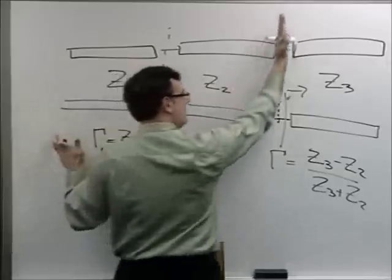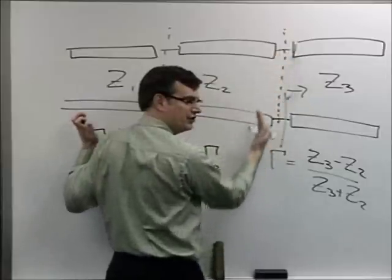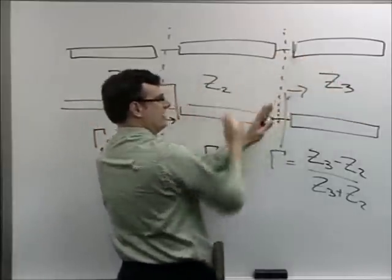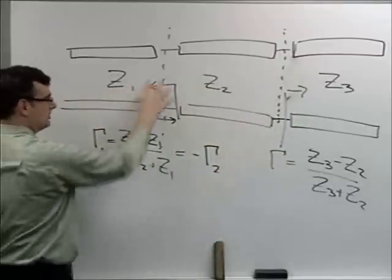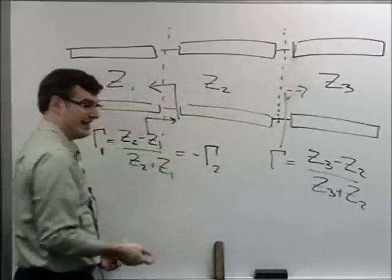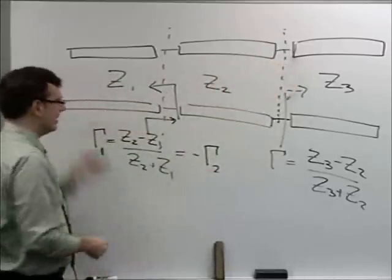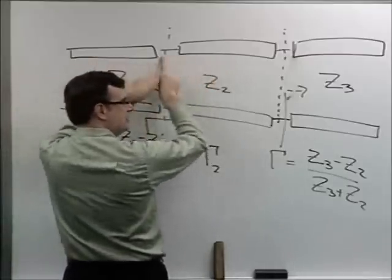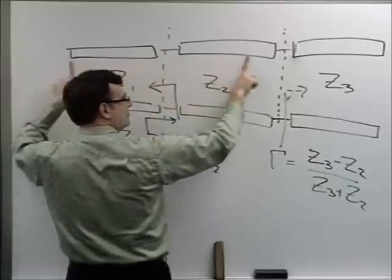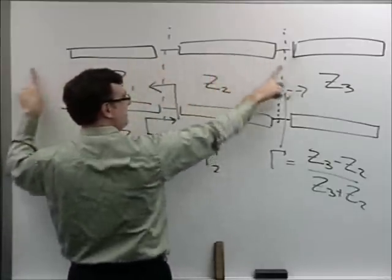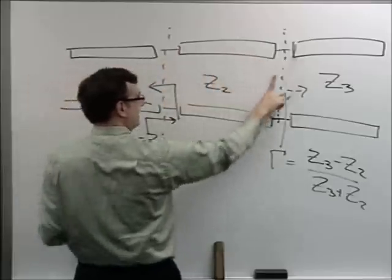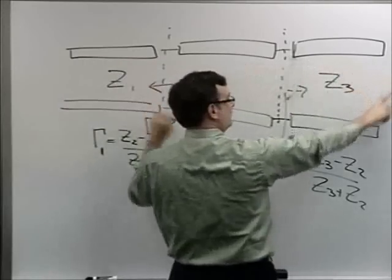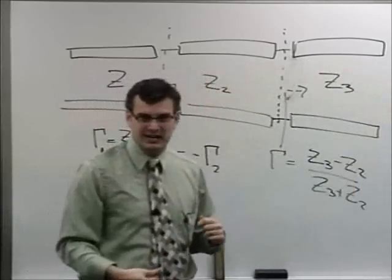What's going on at one junction doesn't immediately affect the reflection coefficient at another — they're calculated with what's immediately adjacent. But in practice, when you launch a pulse down the line, you get reflections and transmissions at every mismatched junction, those reflect again, and the process repeats back and forth on all the different lines again and again. That's what computers are for.